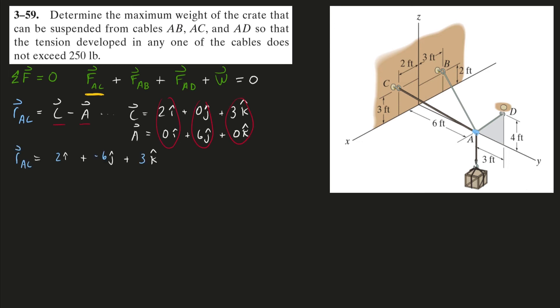Doing that will get me 2 in the x direction, negative 6 in the y, and positive 3 in the z. I can find the length of this position vector by doing the Pythagorean theorem.